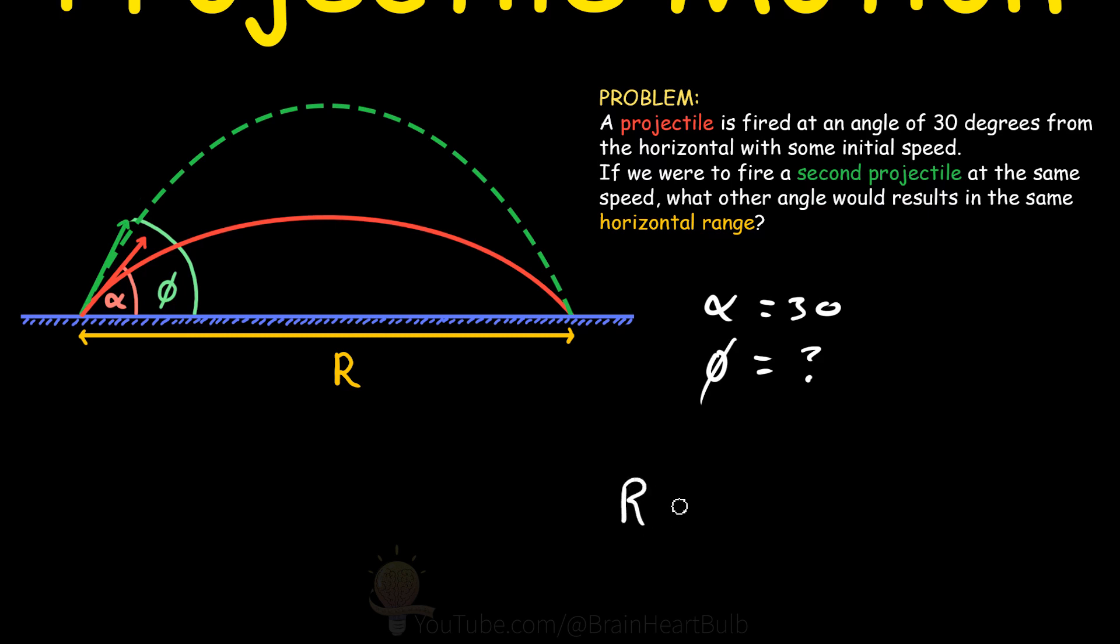Where the range is equal to the initial velocity of the projectile, squared, multiplied by sine 2 times the angle, divided by the acceleration due to gravity.